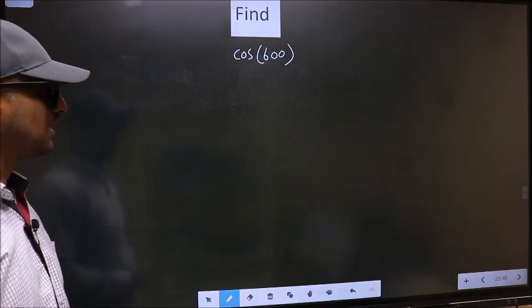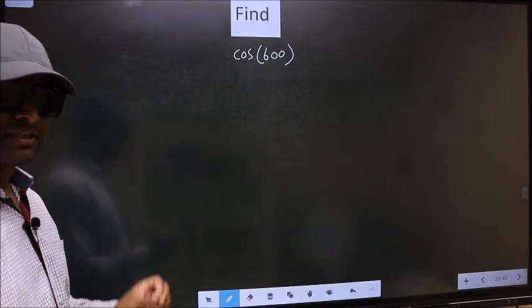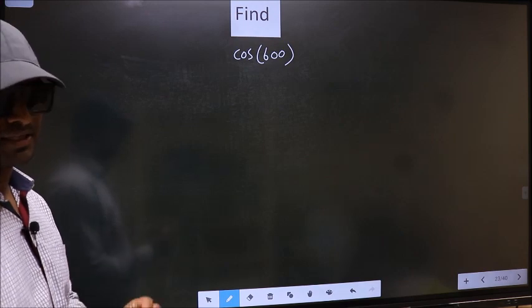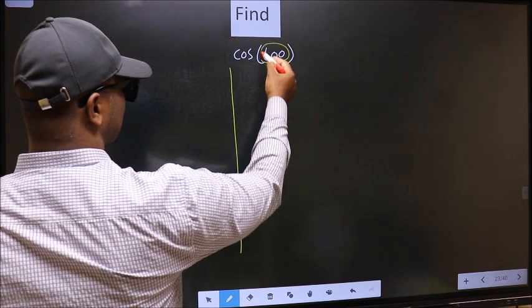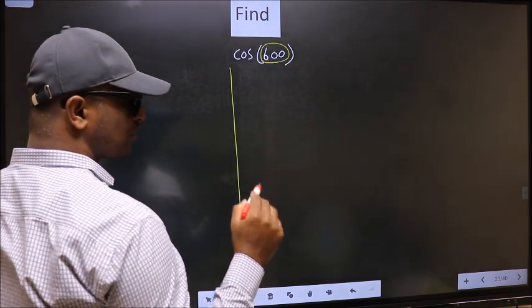Find cos 600. To find this, we should follow this method. See, here we have 600. Now you should check.